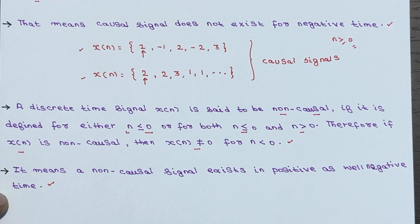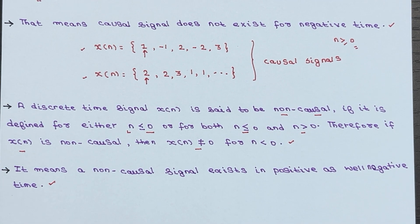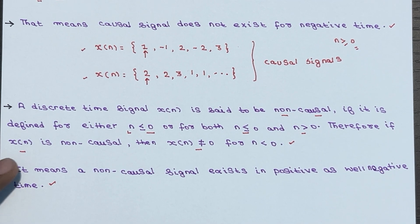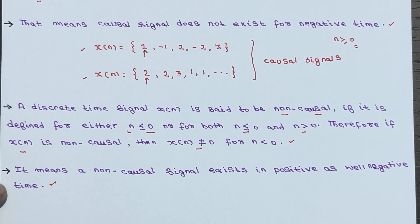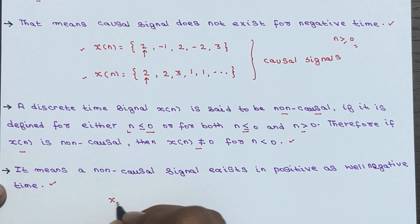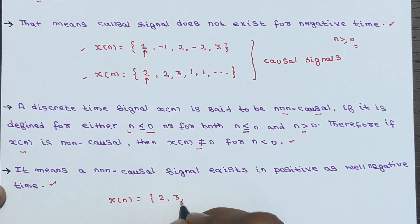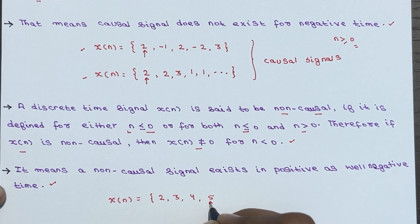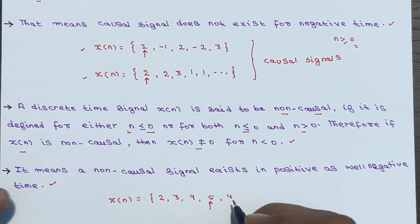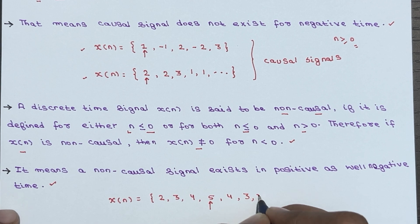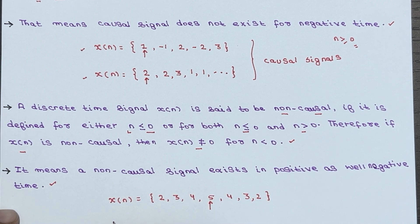Now let's see an example for non-causal signals. So x of n is equal to 2, 3, 4, 5 at n equal to 0, then 4, 3, 2. This is one example where the duration is finite.